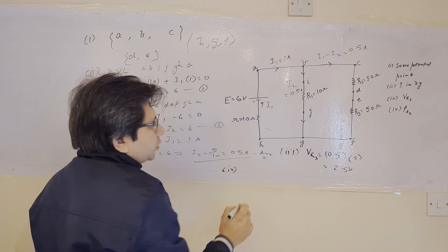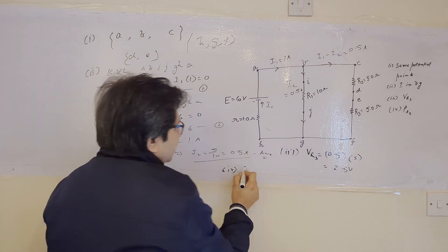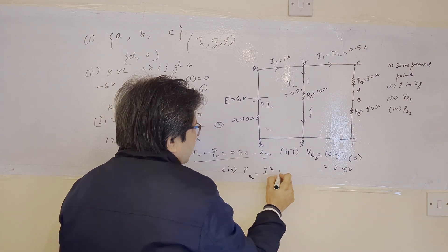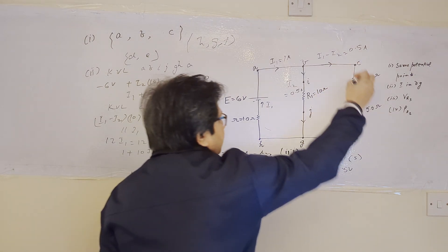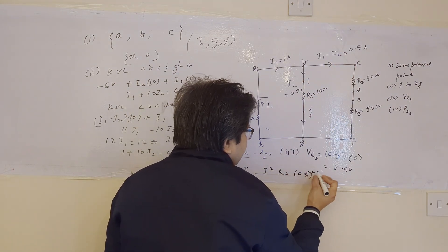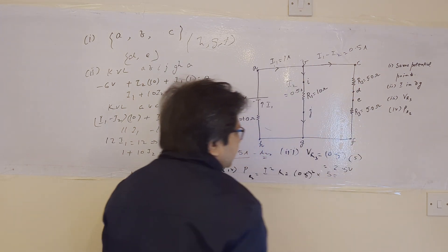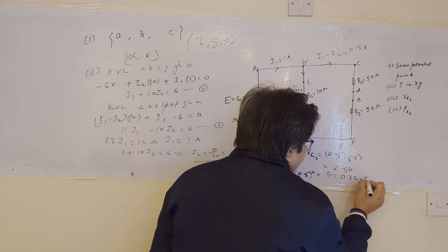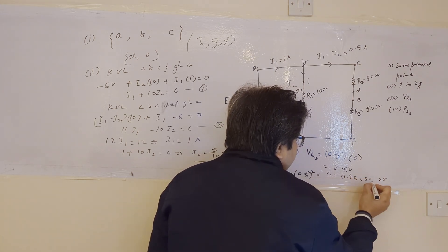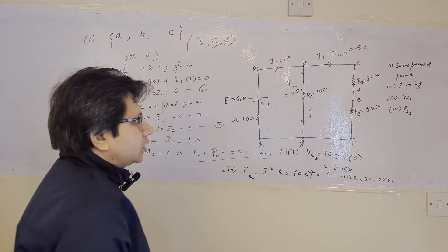For Part D, we have to find the power dissipated in R2. Power is given by P = I²R. The current through R2 is 0.5 amperes, so P = (0.5)² × 5 = 0.25 × 5 = 1.25 watts. Therefore, 1.25 watts is the power dissipated in R2.